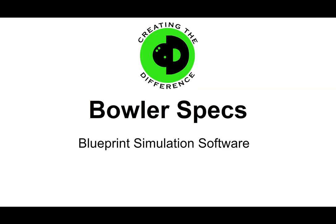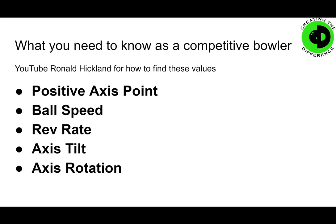So we'll start with the bowler specs. We're going to use Blueprint simulation software to do all of our simulations, which is a very good program to simulate ball motion as it pertains to bowler specs and how it's going to impact the bowling ball. Every bowler that's competitive should know these five things: the positive axis point, your ball speed, rev rate, axis tilt, and axis rotation. These make up you as a bowler and will impact how you interact with the bowling ball.